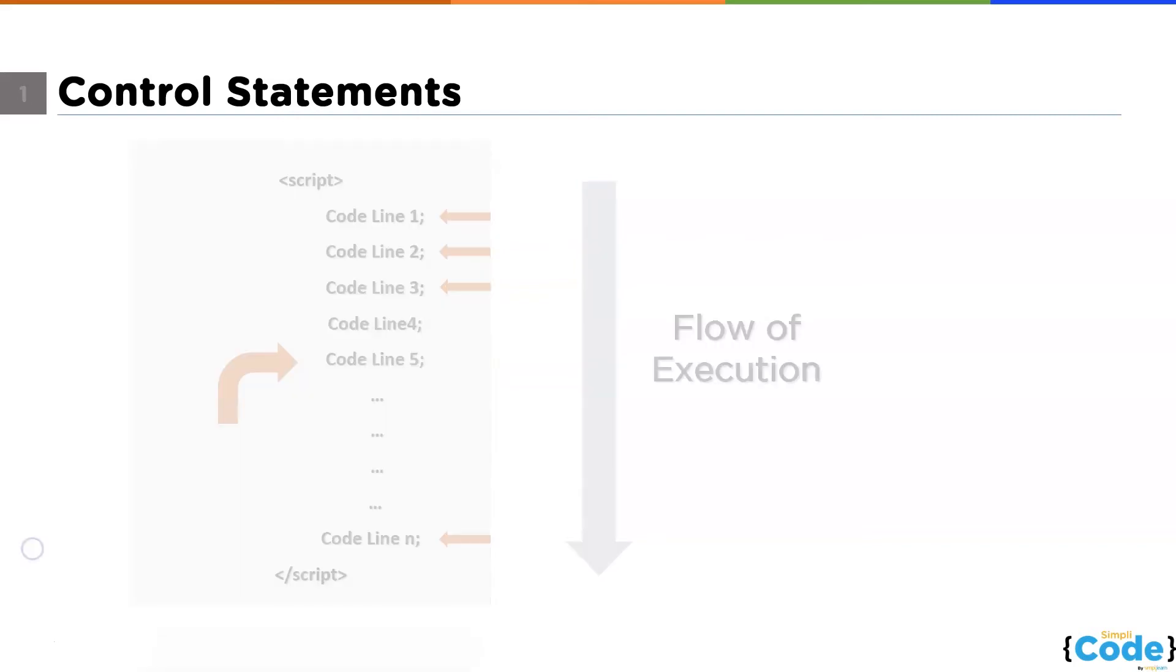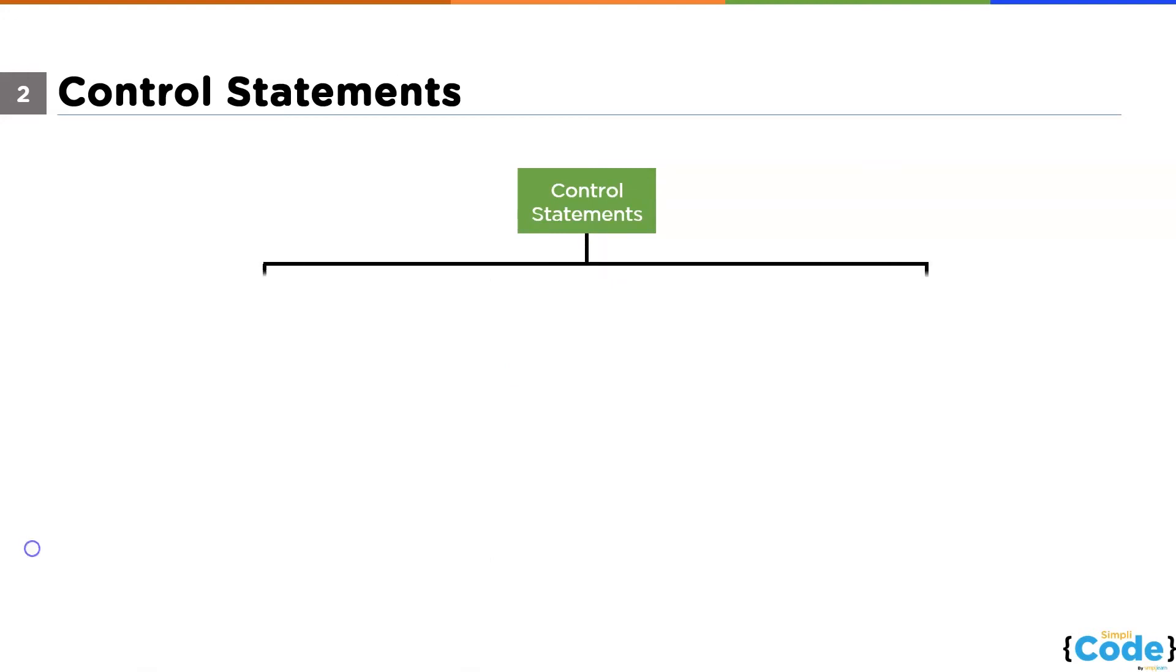In JavaScript, we have two different types of control statements depending upon what action we are performing. So we have the conditional control statements and we have the iterative or looping control statements.